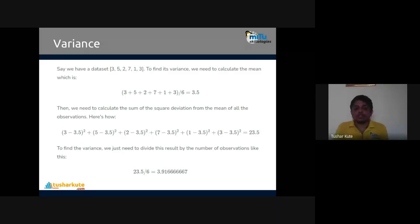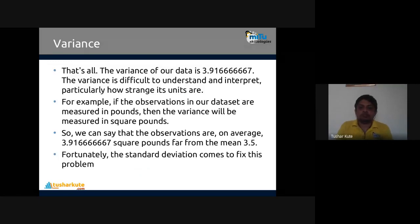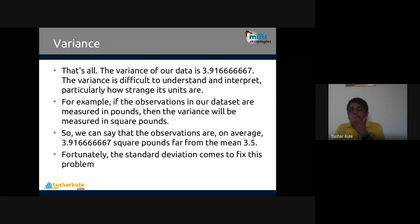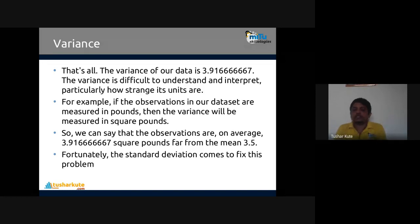We are going to see variance. In the last session we talked about how exactly variance is calculated. The variance of the data is 3.91, and variance is difficult to understand or interpret — particularly how strange its units are. Remember, when the data set is different their variance can also be the same. For example, if observations are measured in pounds, then the variance will be measured in square pounds, because we are measuring the squared deviations.